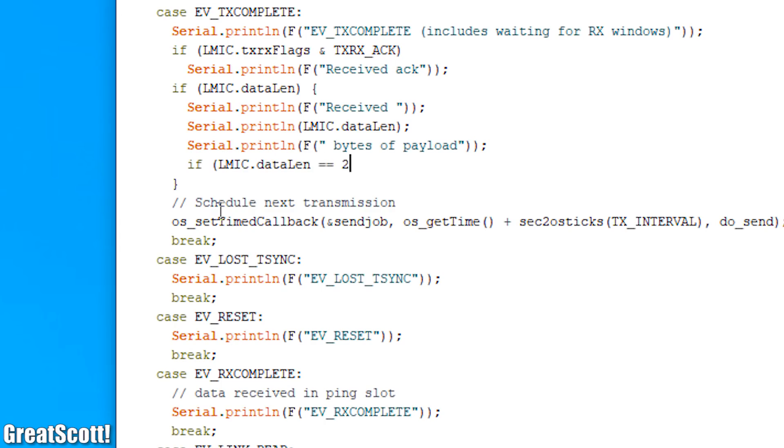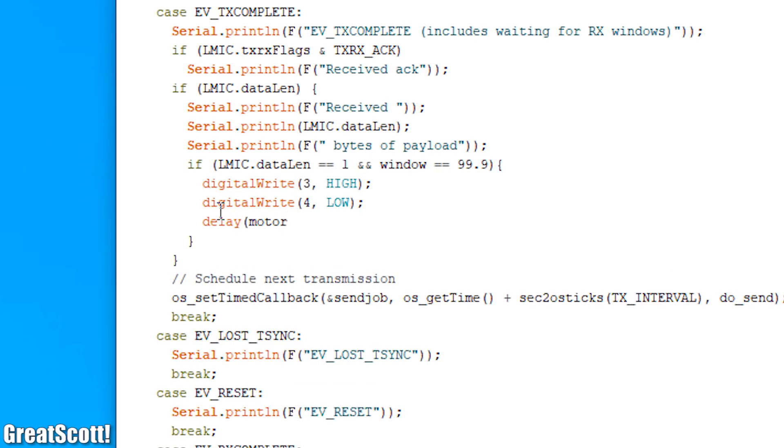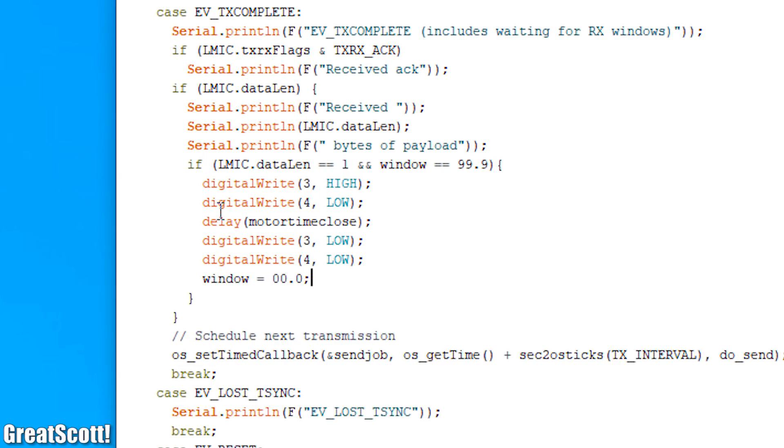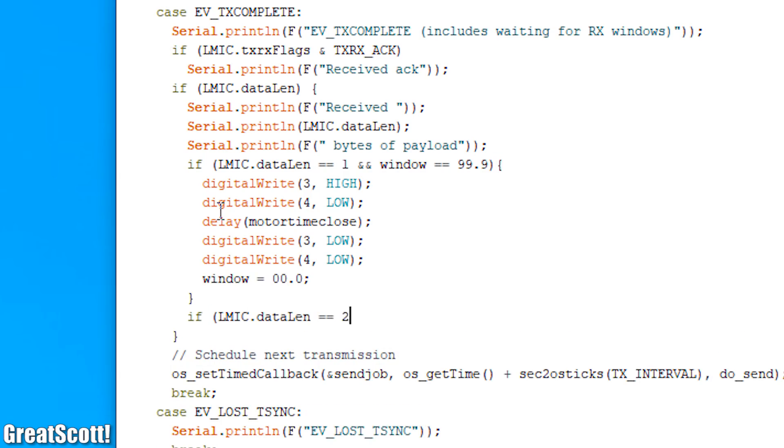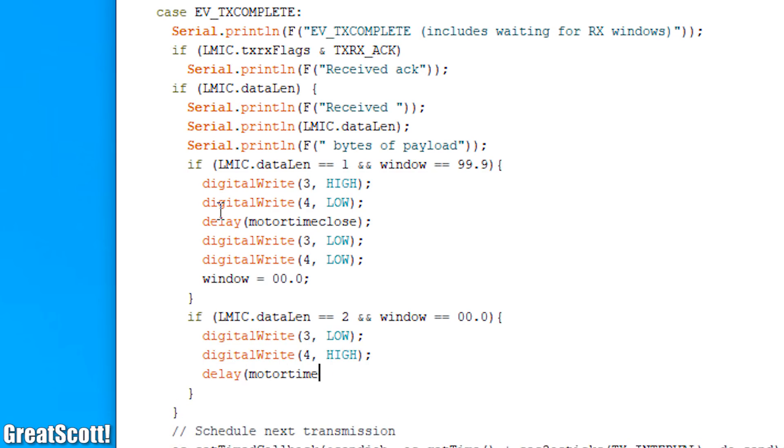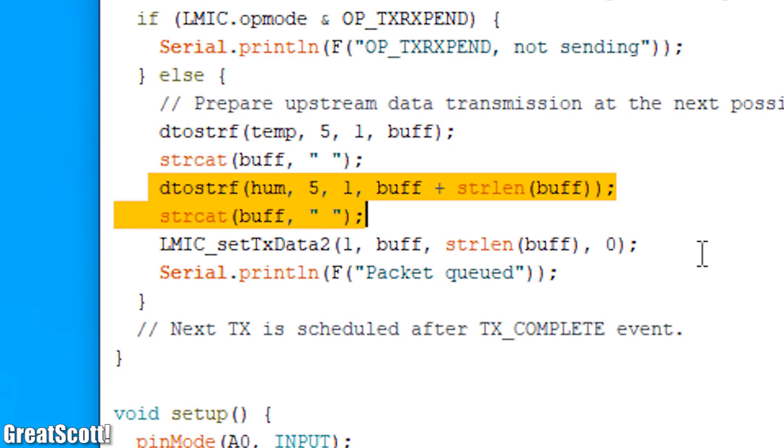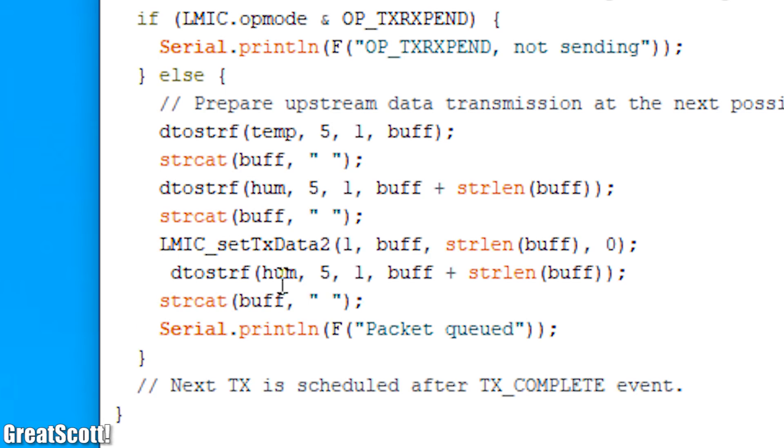So I simply edited the code in a way that it rotates the motor one way if it receives one byte and it rotates the other way if it receives two bytes. Of course I also implemented a delay so that the motor only moves for a short time and the motor can also not rotate the same way twice in a row. And the Arduino will also from now on send over the status of the window with 99.9 standing for being open and 00.0 for being closed.